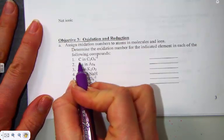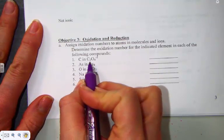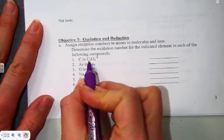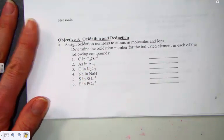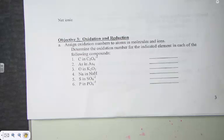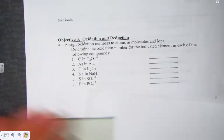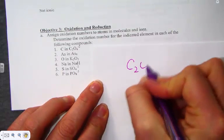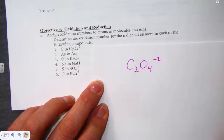For example, with number 1, the carbon in the polyatomic ion called oxalate, C2O4^-2. Looking at our rules for oxidation, rule number 3 has suggested, and I'm just going to write larger so we can see that clearly, C2O4^-2.